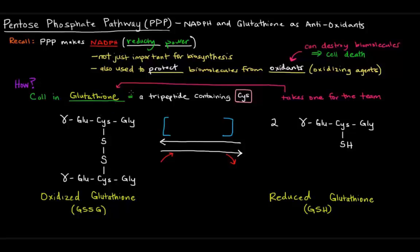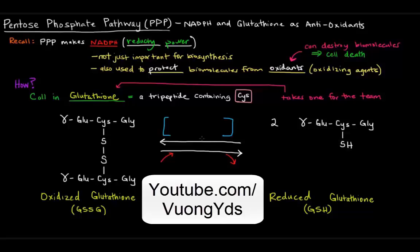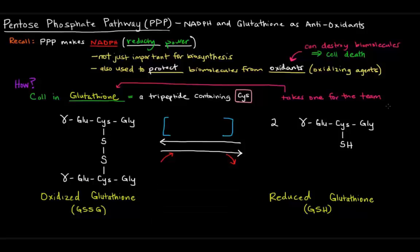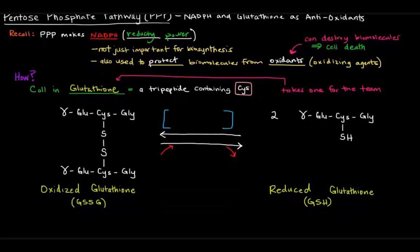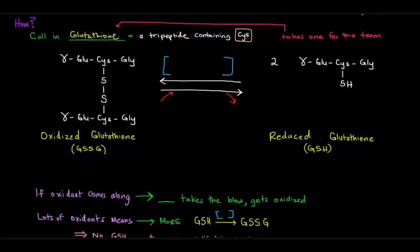So, basically what happens is that glutathione takes one for the team. What do I mean by that? When glutathione is in its reduced form, it can be oxidized. So, if an oxidant comes in, an oxidizing agent comes in, reduced glutathione will say, okay, cool, let me get oxidized instead of these other important biomolecules. So, reduced glutathione will get oxidized and turn into oxidized glutathione. So, that will keep happening to protect us from oxidants.